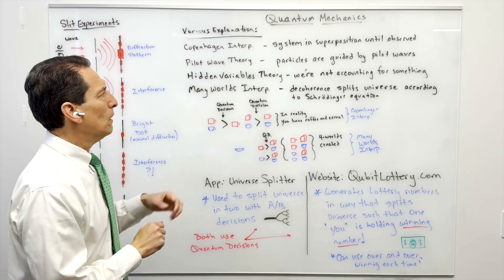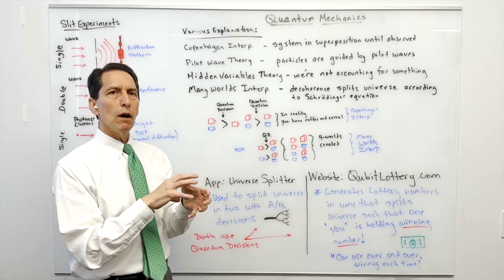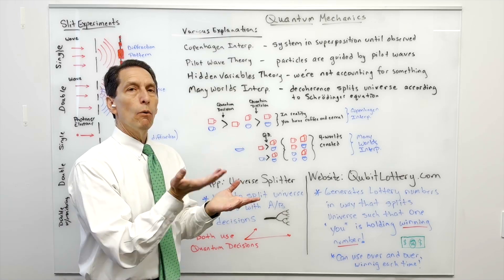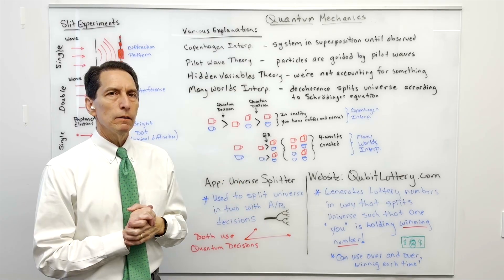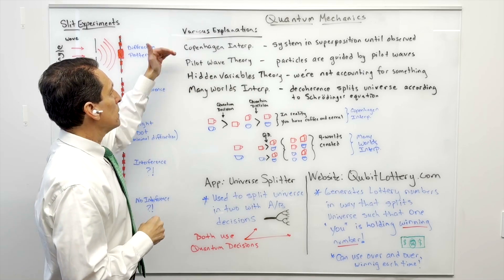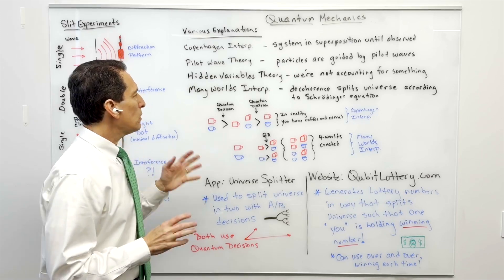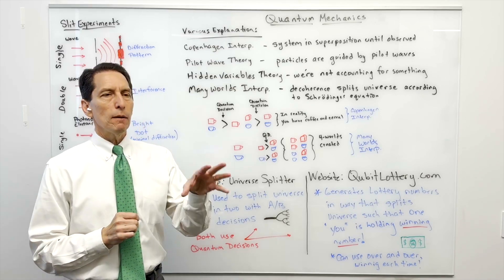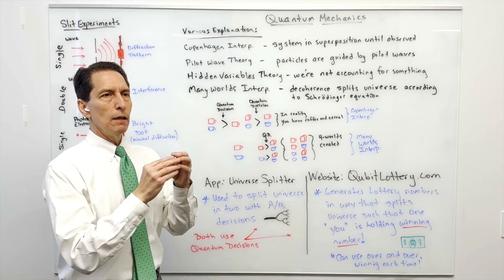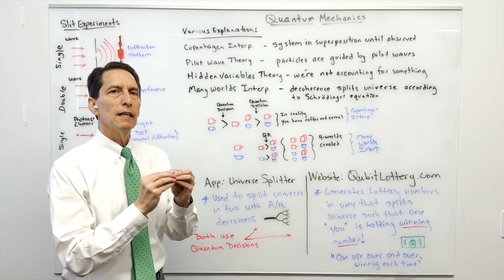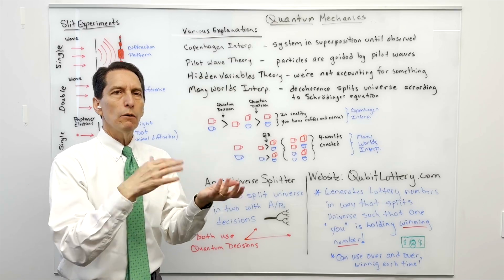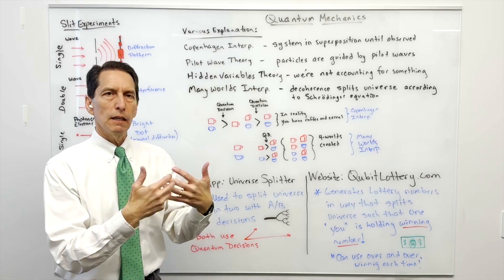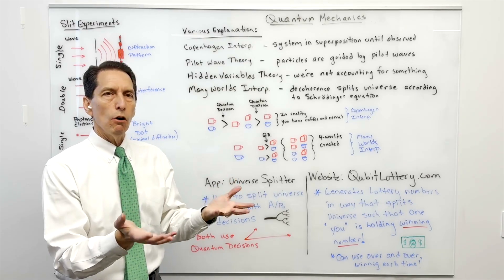What this implies is that every time a quantum decision is made and decoherence occurs, the universe splits into two identical universes — one with each outcome. Let's compare Copenhagen versus many worlds using a fun example: using a quantum computer to decide what to have for breakfast. Each time, the quantum computer forces a subatomic particle in superposition to decohere and give either a one or a zero.